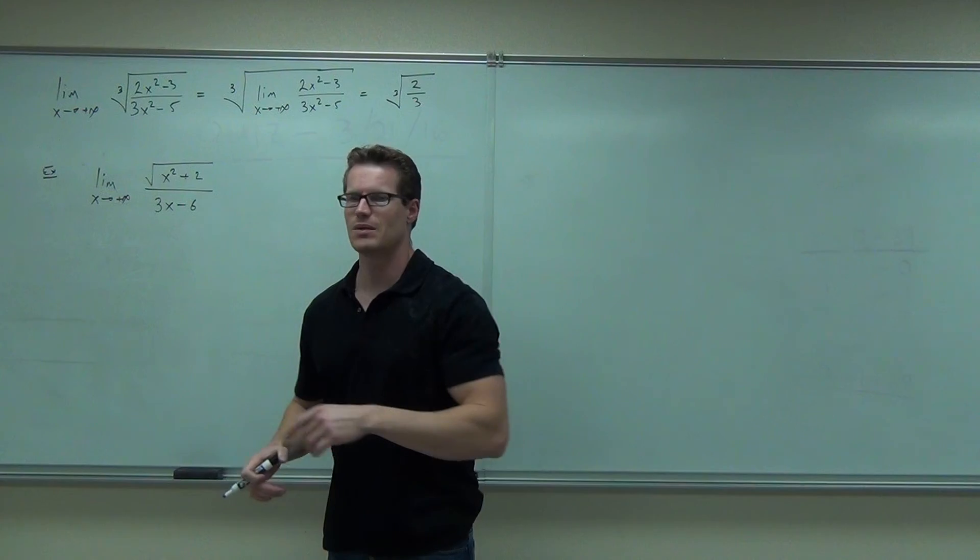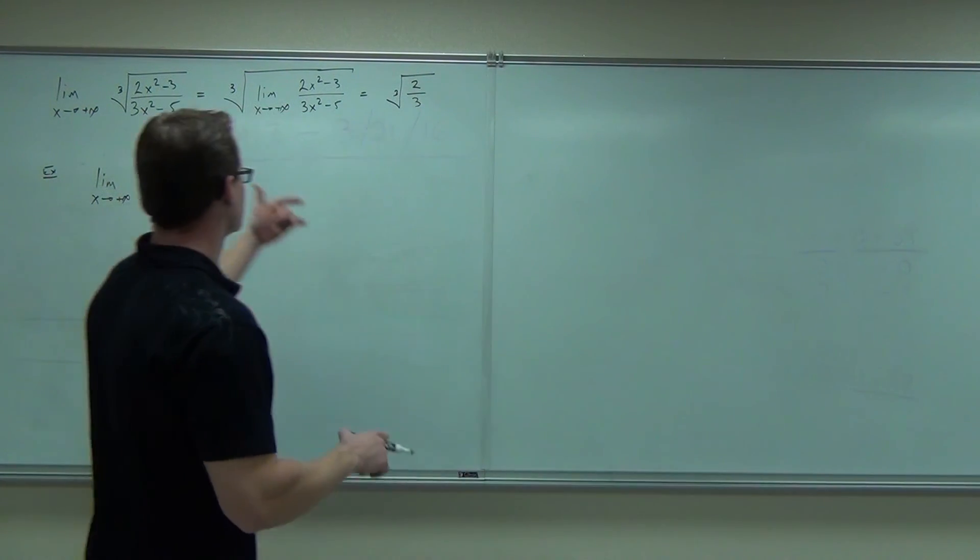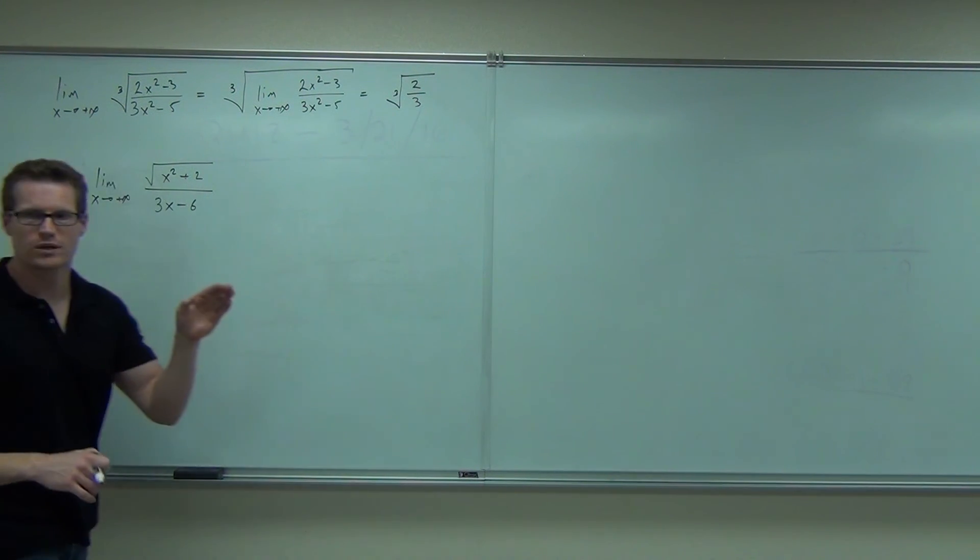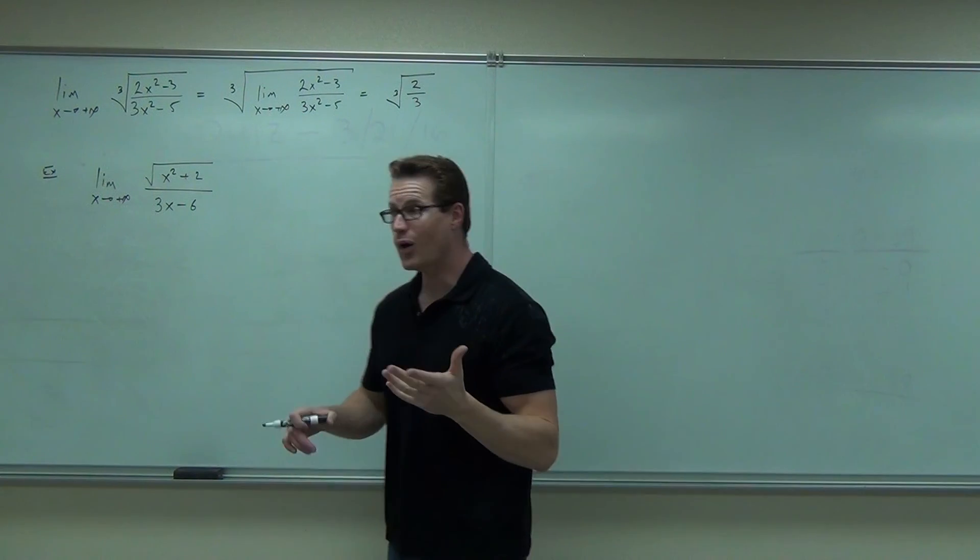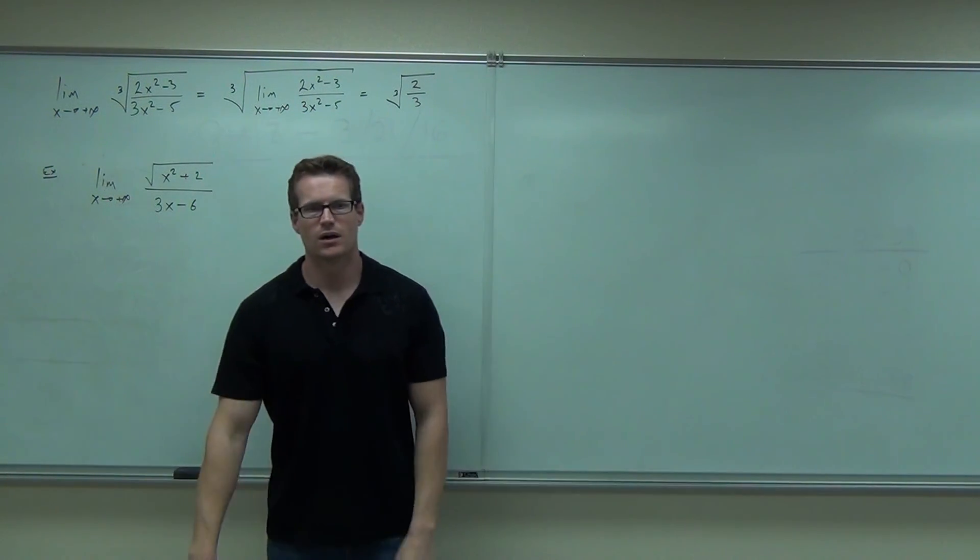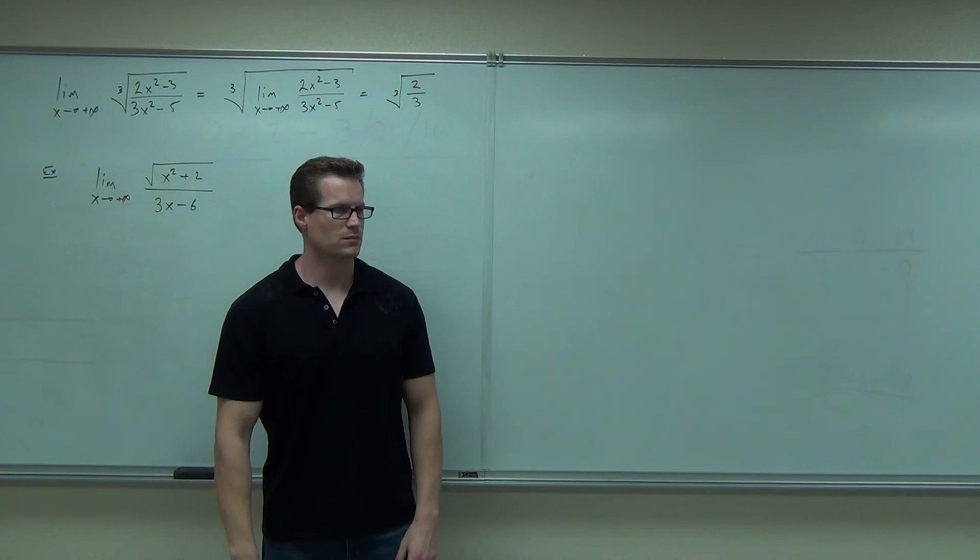Now I showed you that one again because I want you to consider the problem that's just below it. Can I do the same thing here? For instance, can I pull out the square root around the whole limit? No, because that square root is not around this whole function. It's just on the numerator. So, oh my gosh, well, what do we do? What do we do?